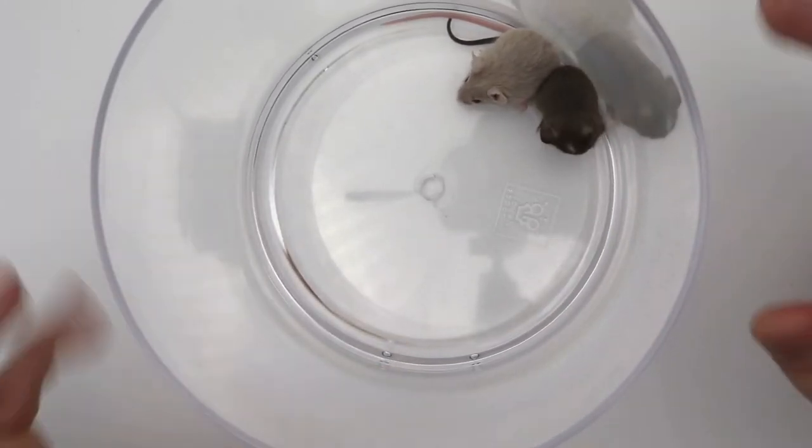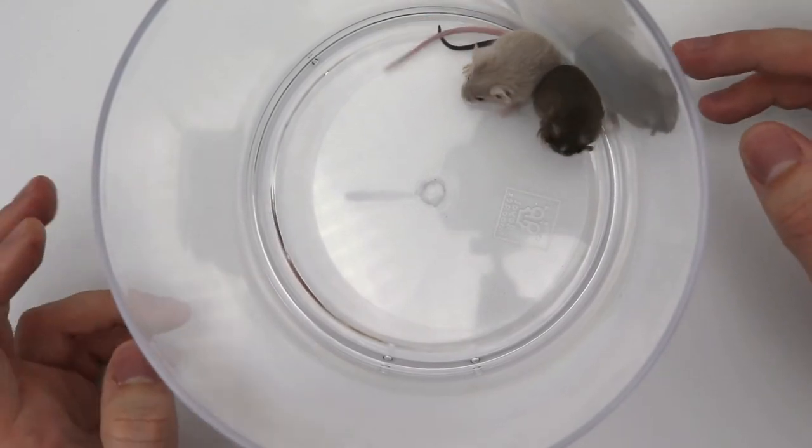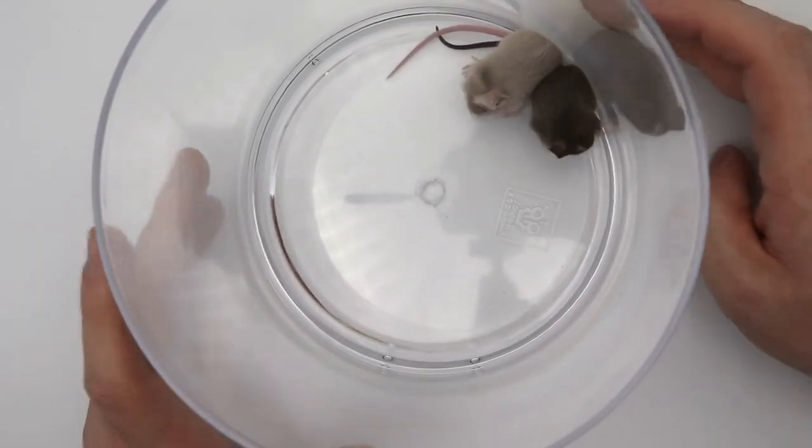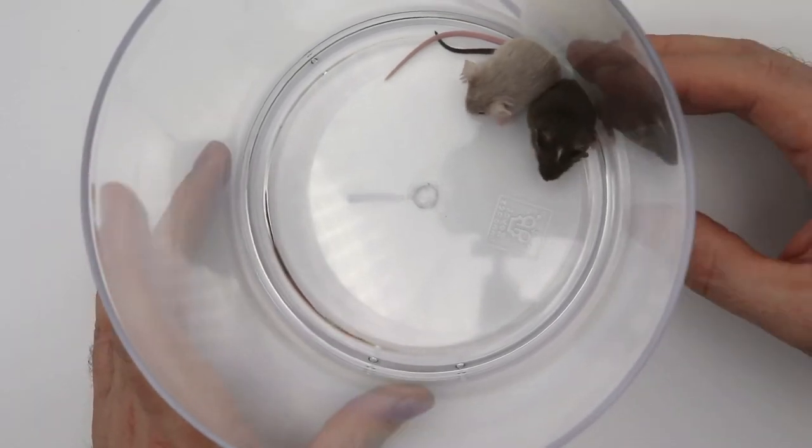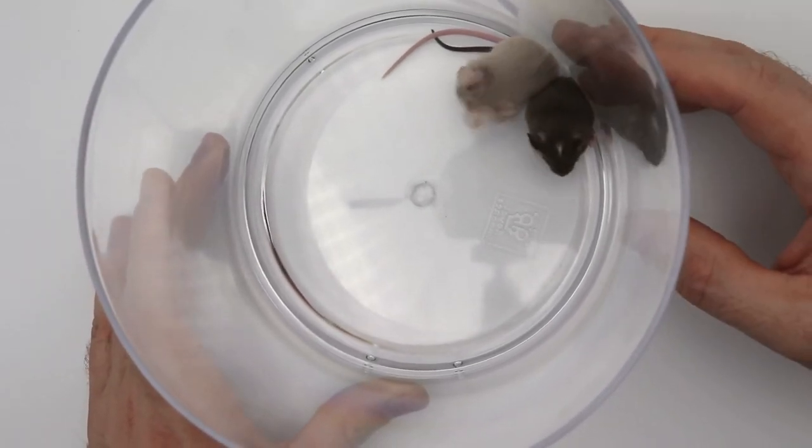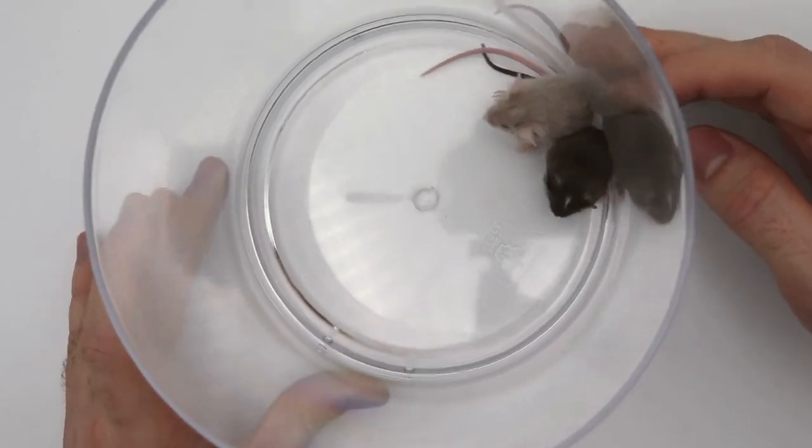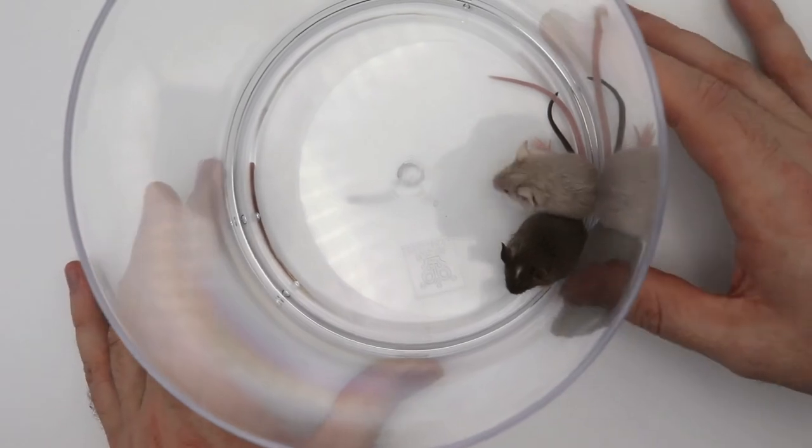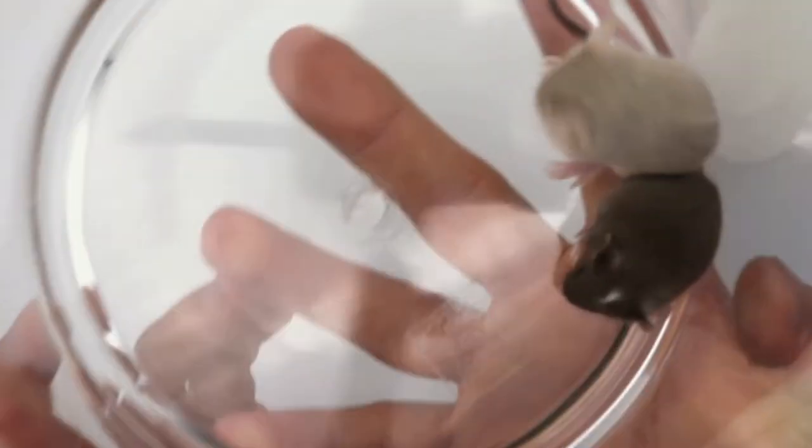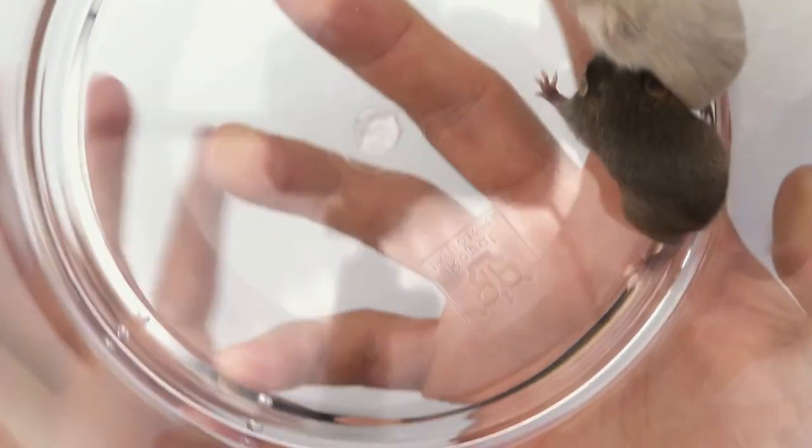But the original small male that I started with was about 11 grams, 11.5 grams. And so these guys are definitely smaller than that. But they will probably be a little bit larger than 11 grams, 11.5 grams when they are adults. So I don't think I've achieved the size that I'm looking for quite yet. But we'll get there with time.